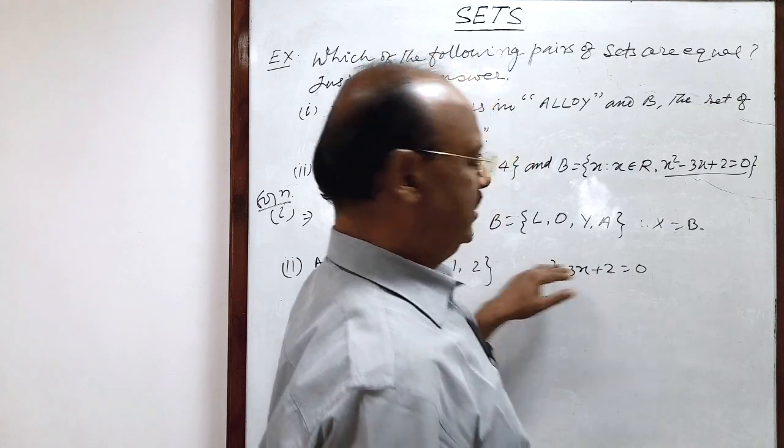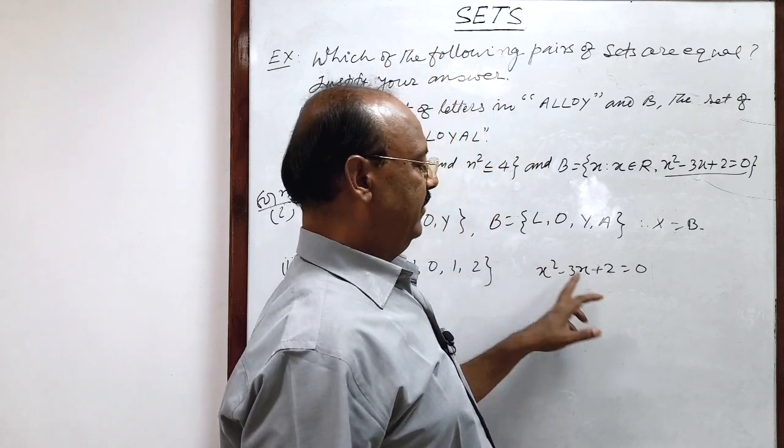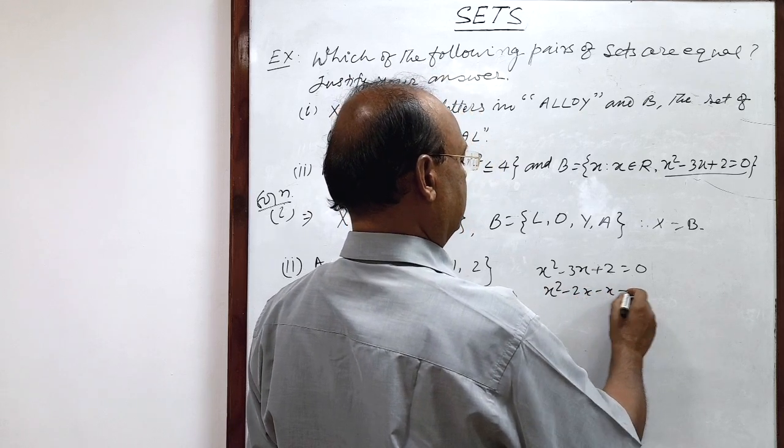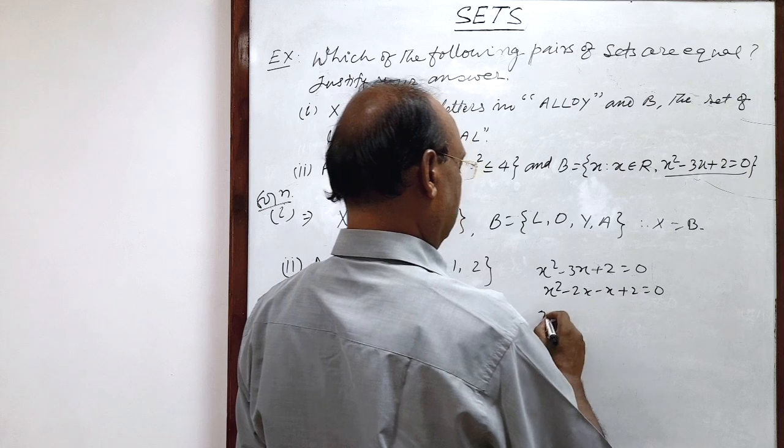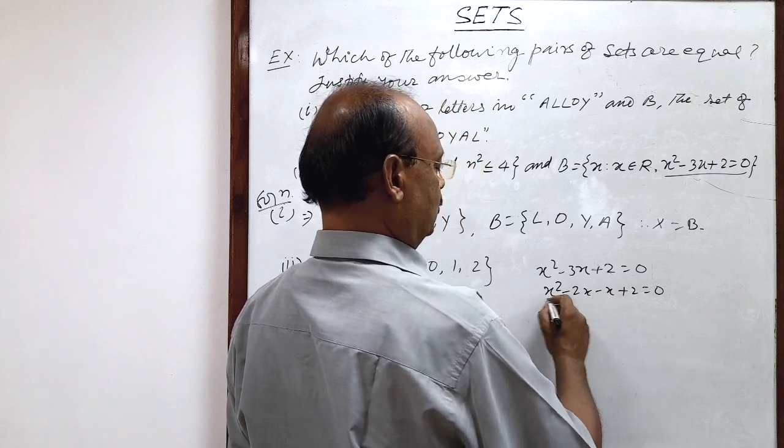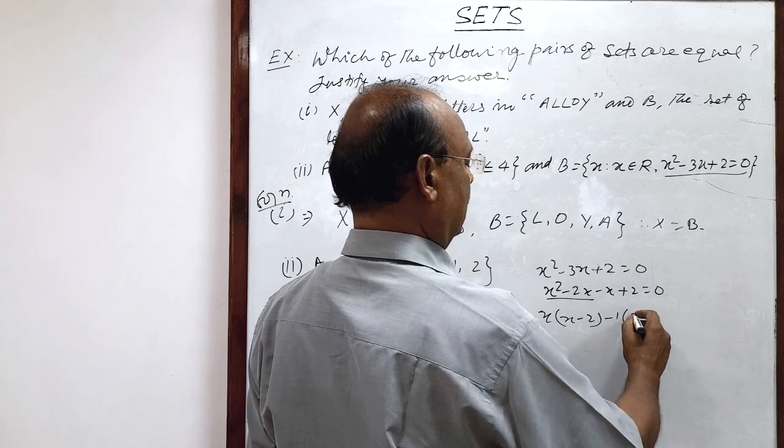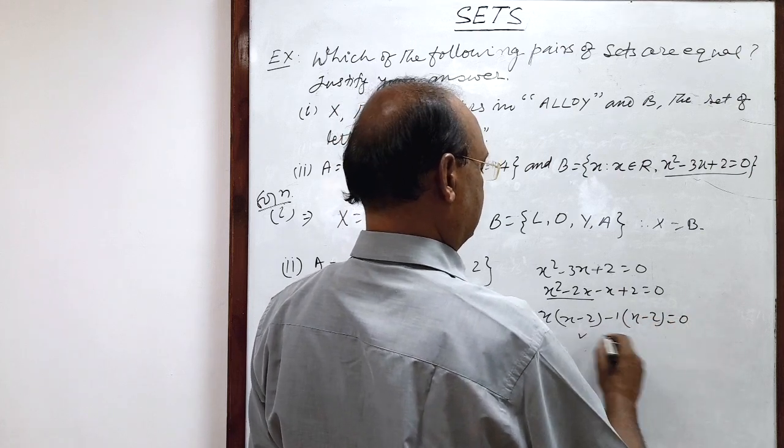We can solve it, this is a quadratic equation. We can solve it by factorizing the middle term. So this is x square minus 2x minus x plus 2 is equal to 0. X will be common from the first two terms, so x minus 2, and -1 will be common, x minus 2 is equal to 0.